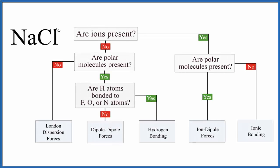Let's look at the intermolecular forces present in NaCl — sodium chloride. For sodium chloride, we have a metal here: sodium is a metal and chlorine is a non-metal. So we're thinking it's going to be an ionic compound.